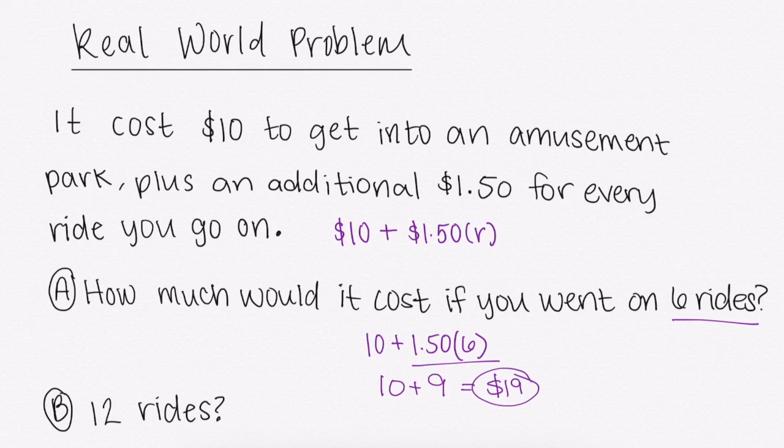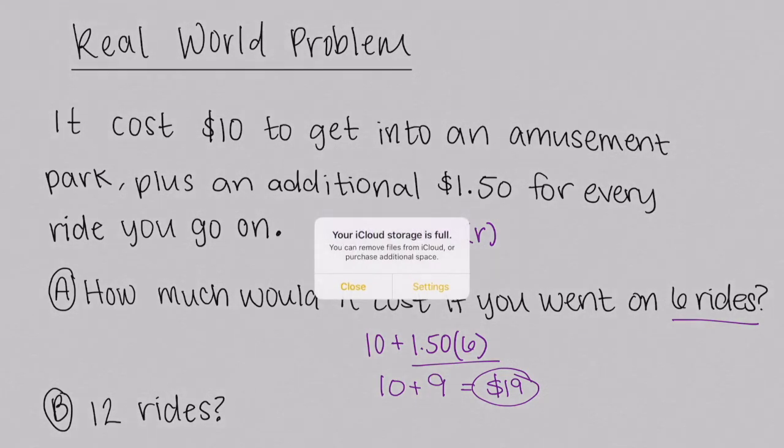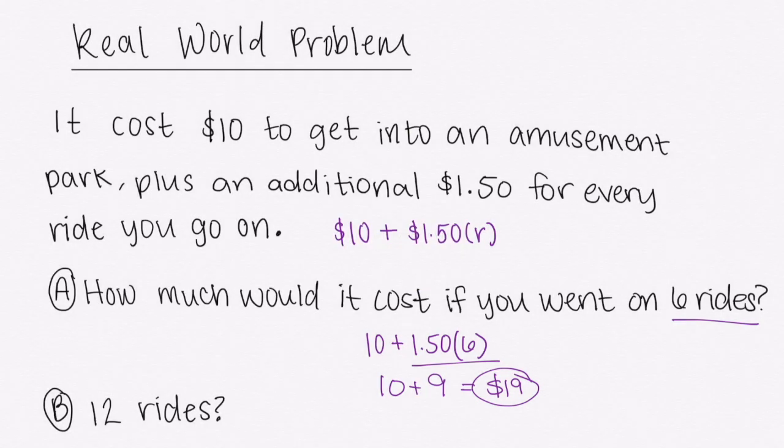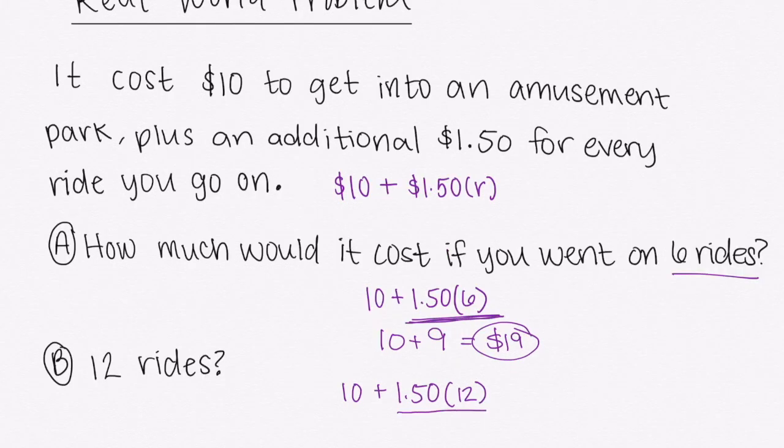Now, a lot of times you would think, okay, well, it's $19 for 6 rides. So for 12, it should be double. However, that is not correct because it's not just the cost per ride. That plus $10 is not going to make it proportional. So let's take a look at what our answer would be for 12 rides. So same thing, we're going to have our $10 plus our $1.50 per ride. And this time we're replacing our rides with 12. So yes, I can double the amount of ride costs because that part is proportional, right? $1.50 times 6 should be half the amount $1.50 times 12 is.